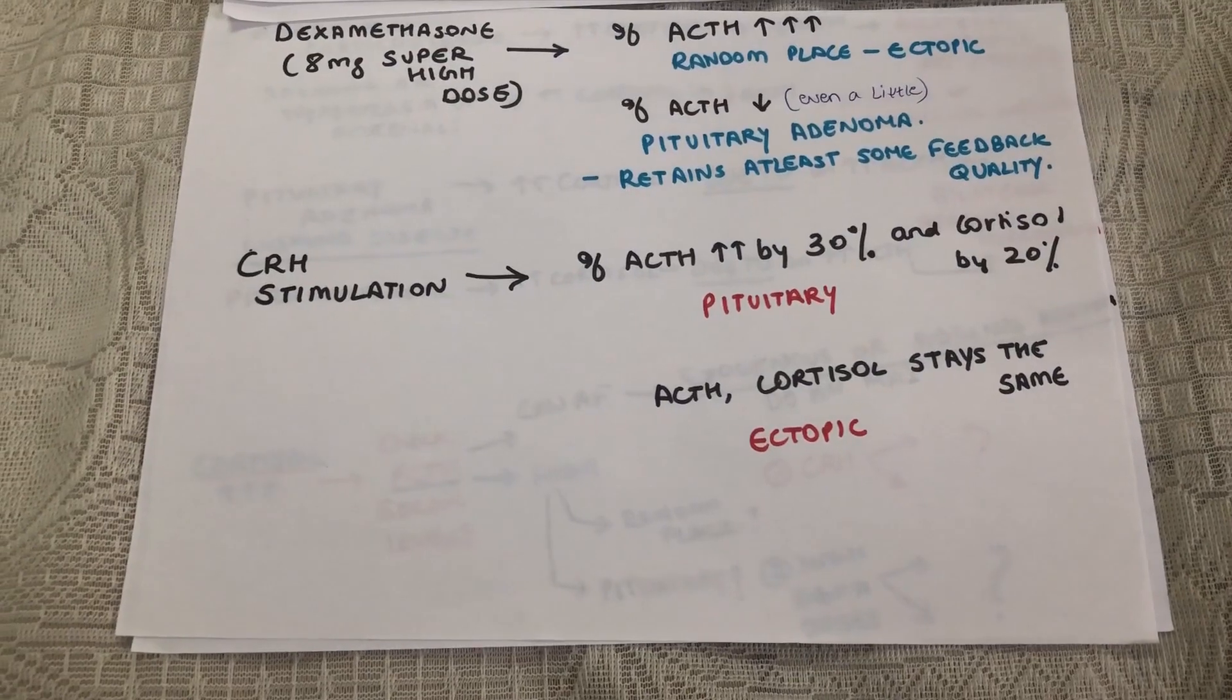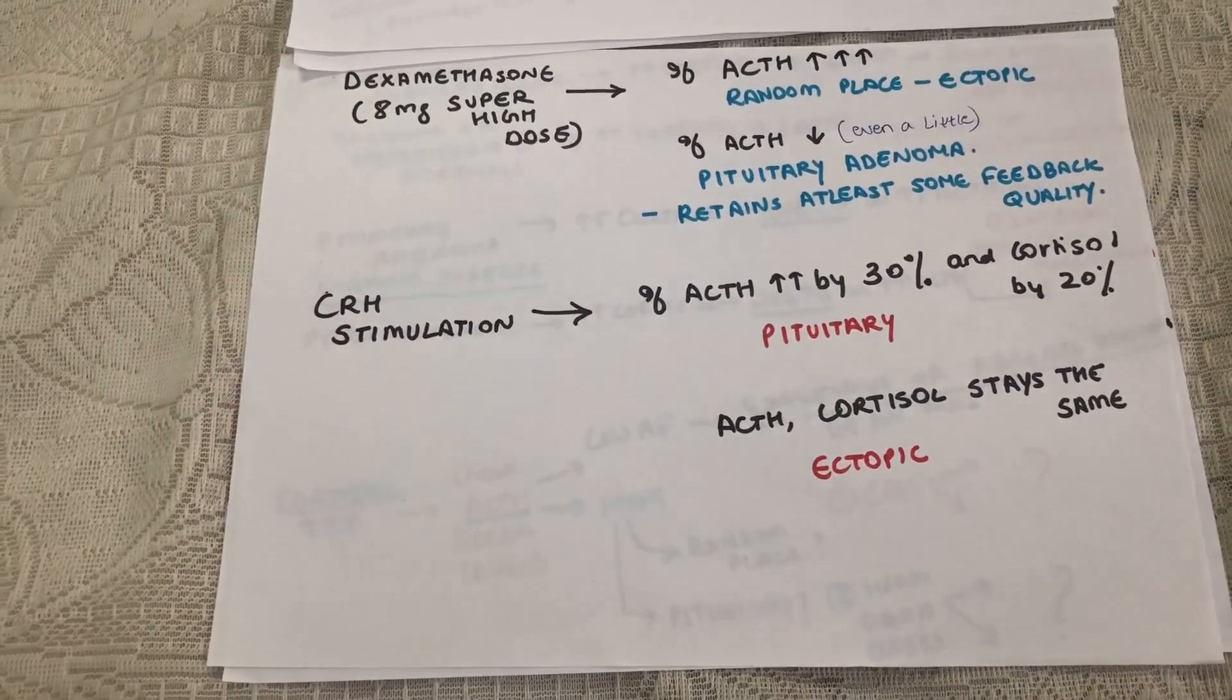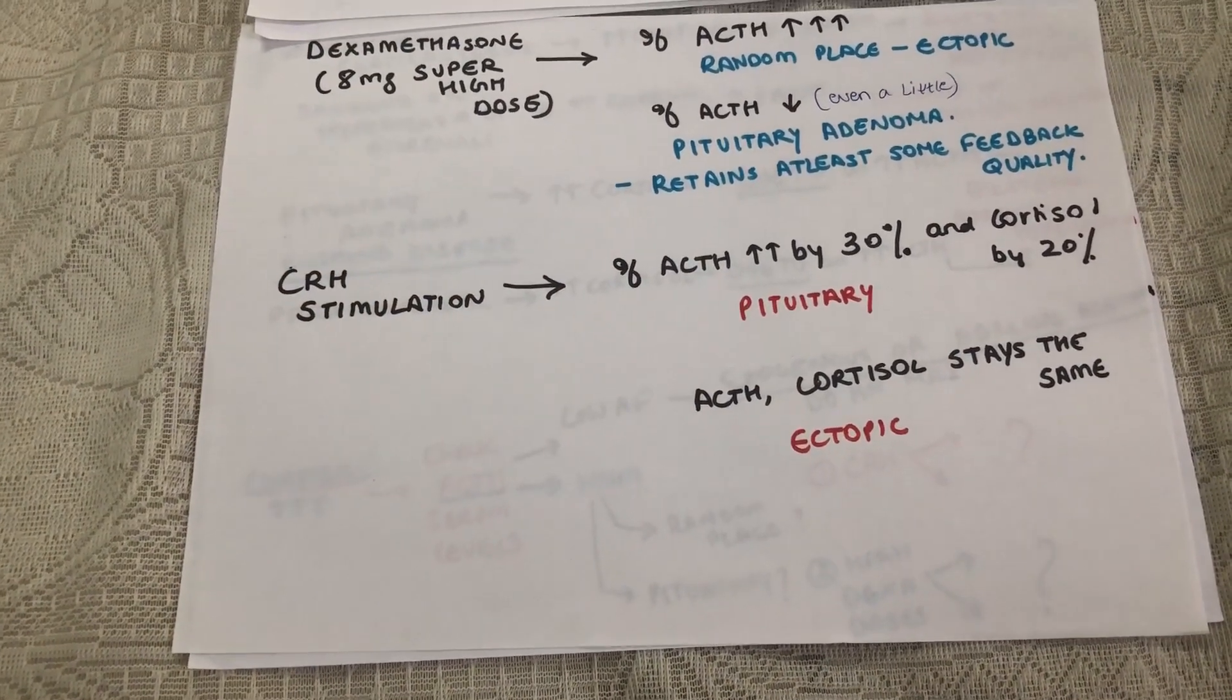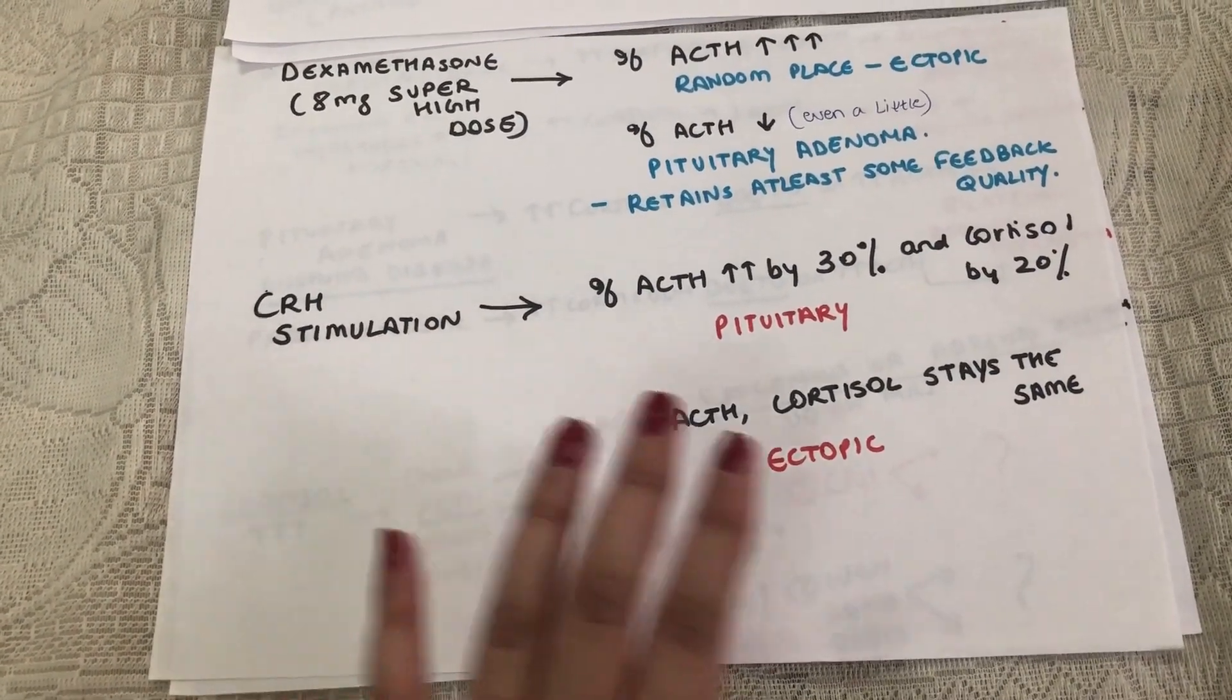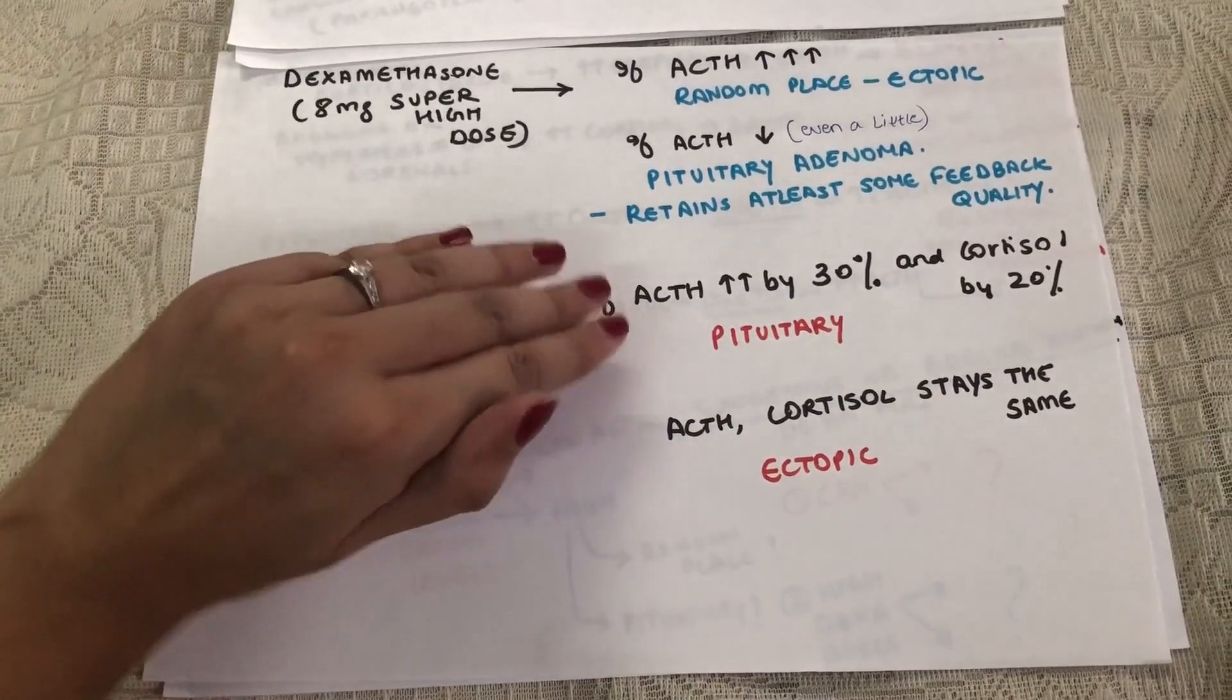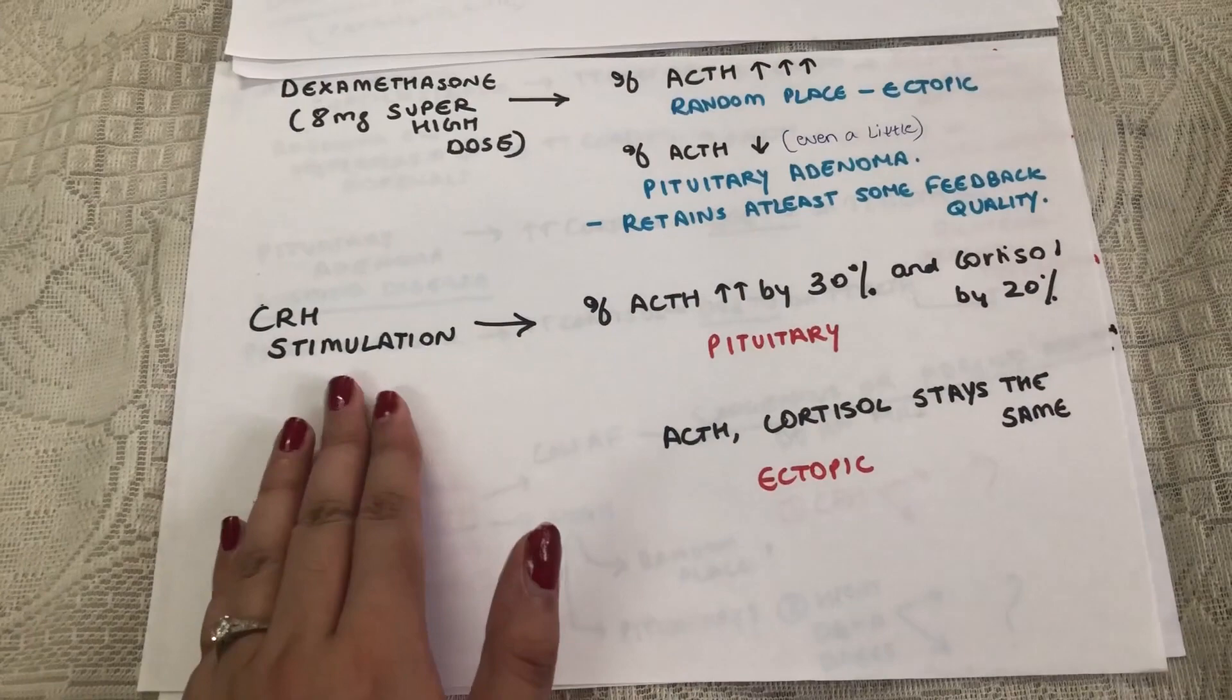The CRH stimulation works like this: You inject the patient with artificial CRH and then measure the ACTH levels at different intervals. In a normal person, the CRH stimulation will lead to a 400% increase in ACTH. But in these two cases, you already have an excessive amount of ACTH being produced. So what will the CRH stimulation do here?